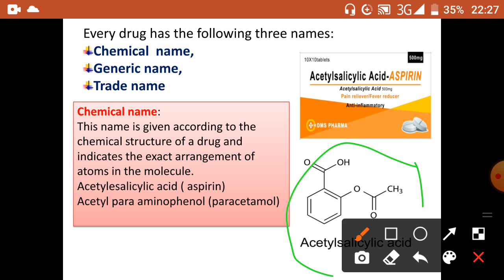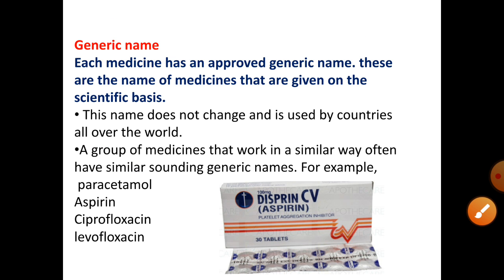The generic name is the approved name given to a medicine on a scientific basis. This is the official name that does not change and is used by countries all over the world. For example, paracetamol — an analgesic — is called paracetamol everywhere in the world, including Pakistan.